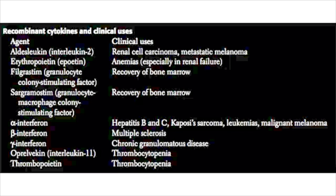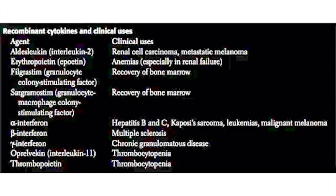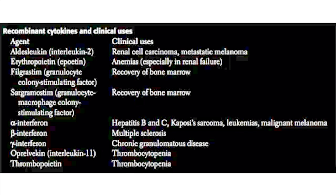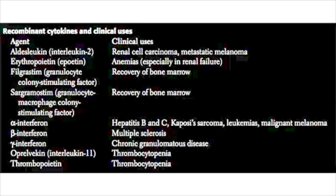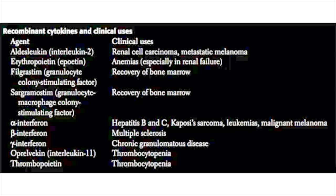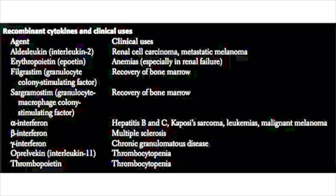Sargramostim is granulocyte-macrophage colony-stimulating factor (GM-CSF). Just like filgrastim, it causes recovery of the bone marrow, with particular emphasis on increased production of macrophages as well as granulocytes like neutrophils. Alpha interferon is used in the treatment of hepatitis B, hepatitis C, and Kaposi's sarcoma in HIV patients. Beta interferon is used pretty much exclusively for the treatment of multiple sclerosis. Gamma interferon is used to treat chronic granulomatous disease.